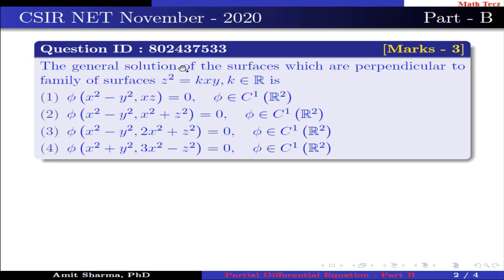Question is: the general solution of the surfaces which are perpendicular to family of surfaces z² = kxy, k ∈ R is option 1: φ(x² - y², xz) = 0, φ ∈ C¹(R²).